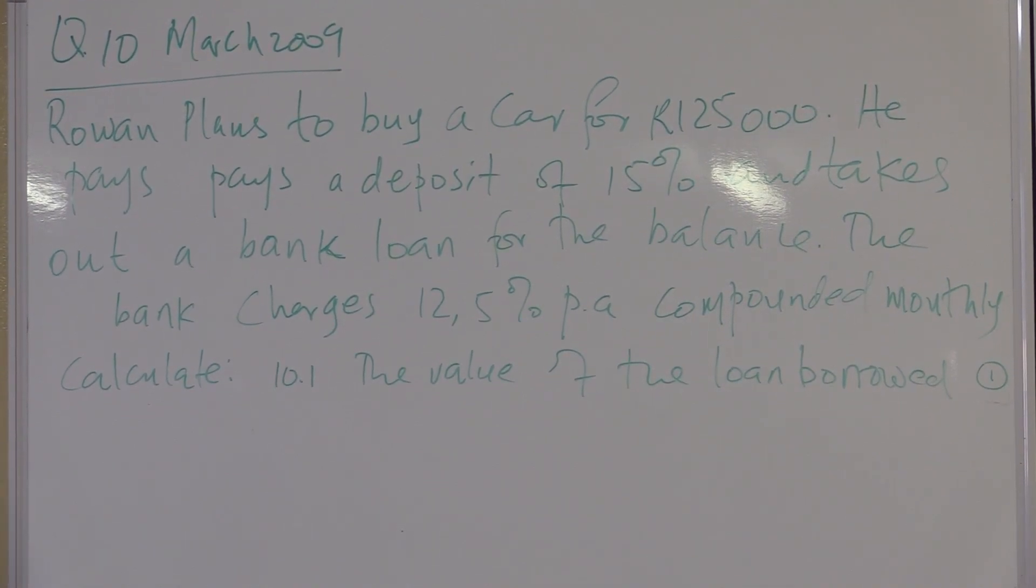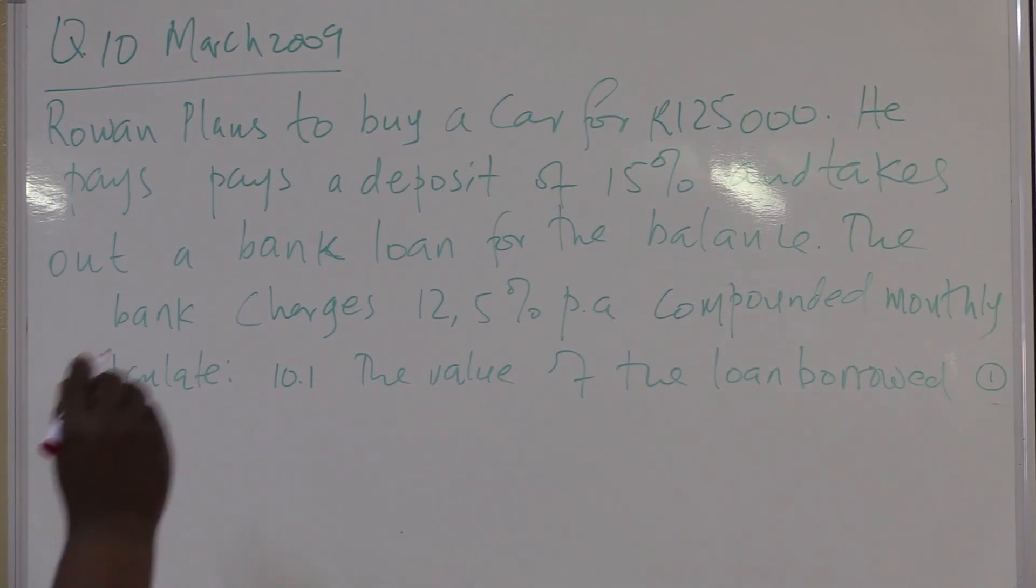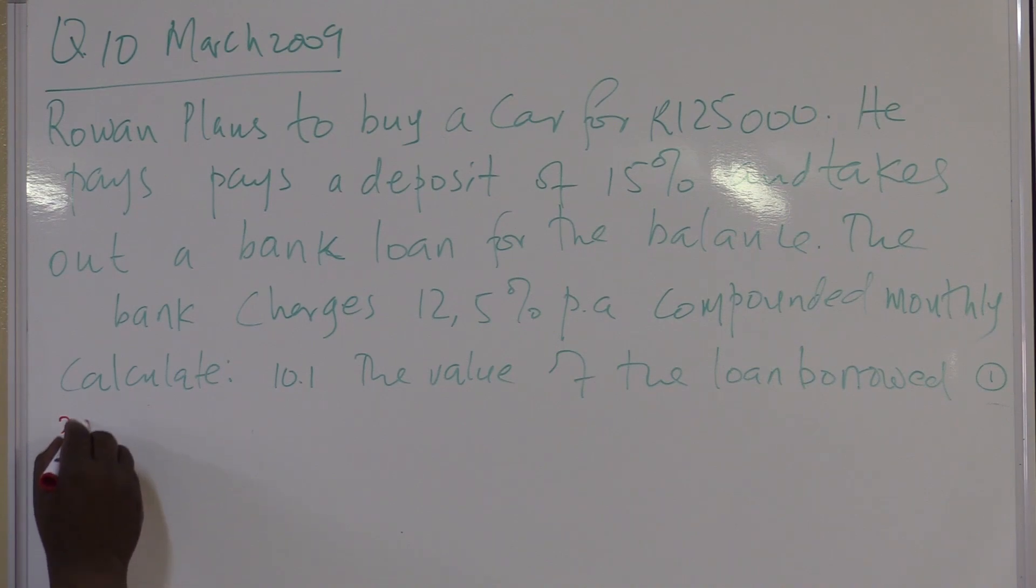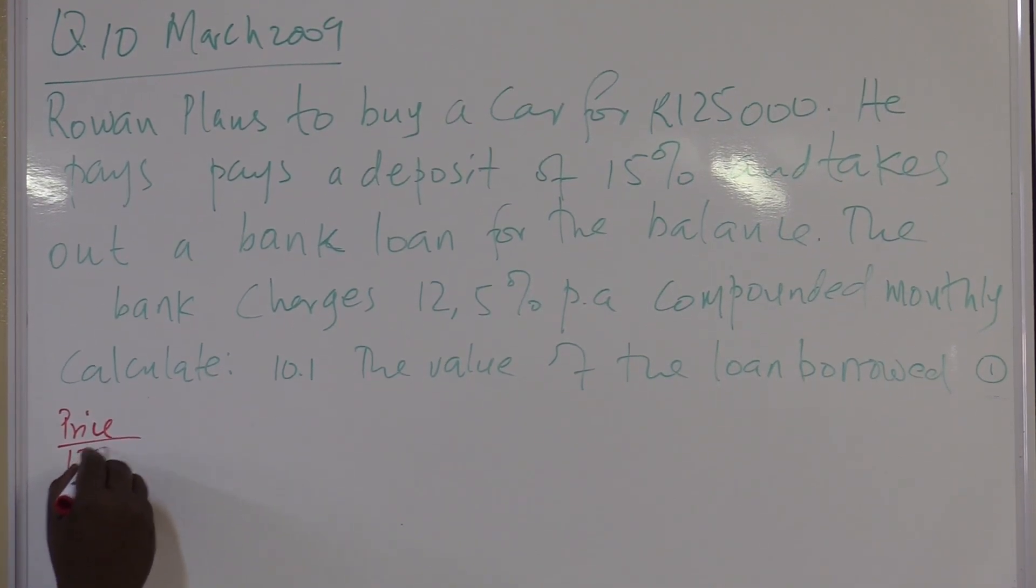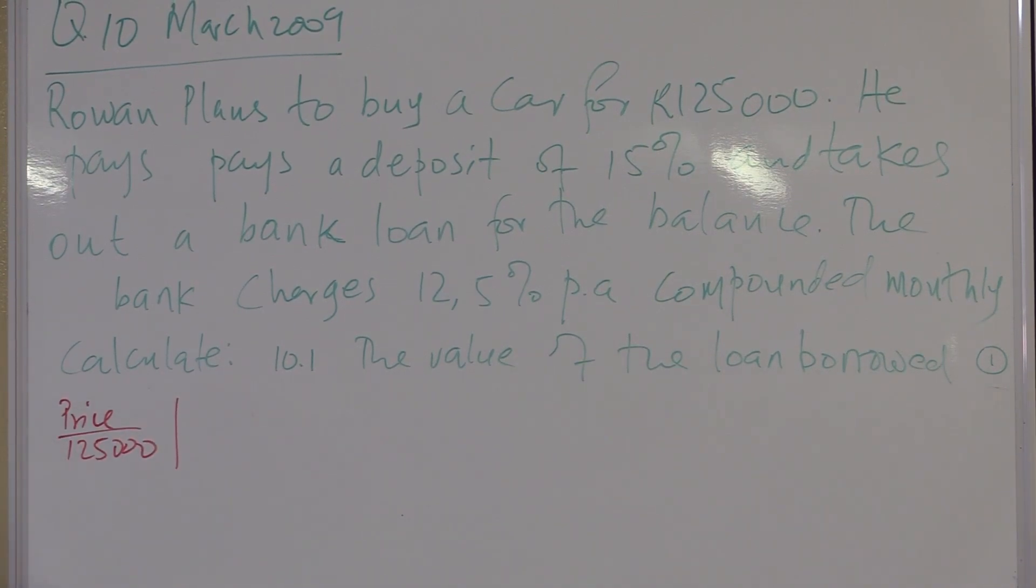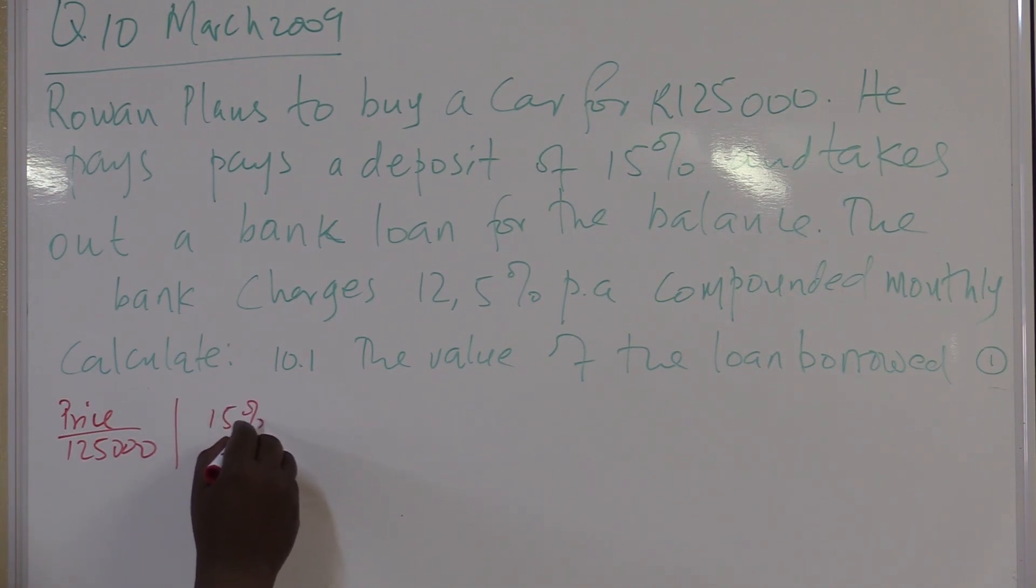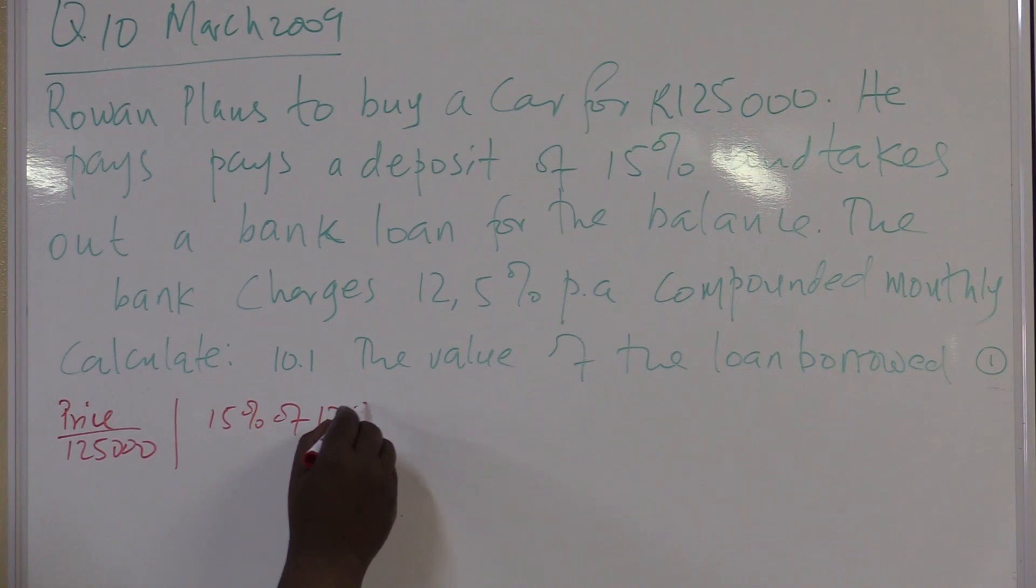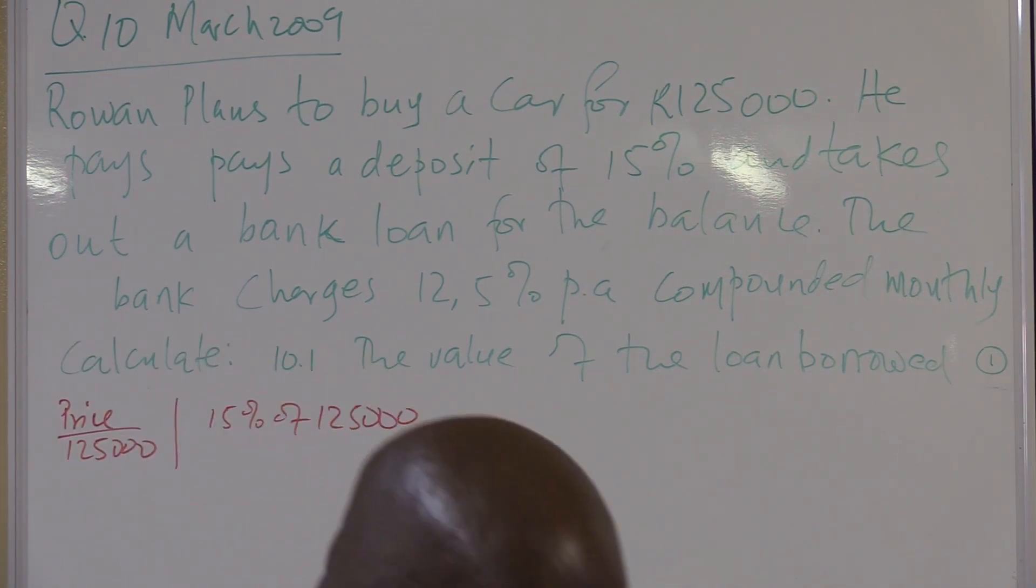Let's collect our data. Rowan plans to buy a car for $120,000. I don't know what that is, but I know that it's the price of the car. It is how much it is, $125,000.